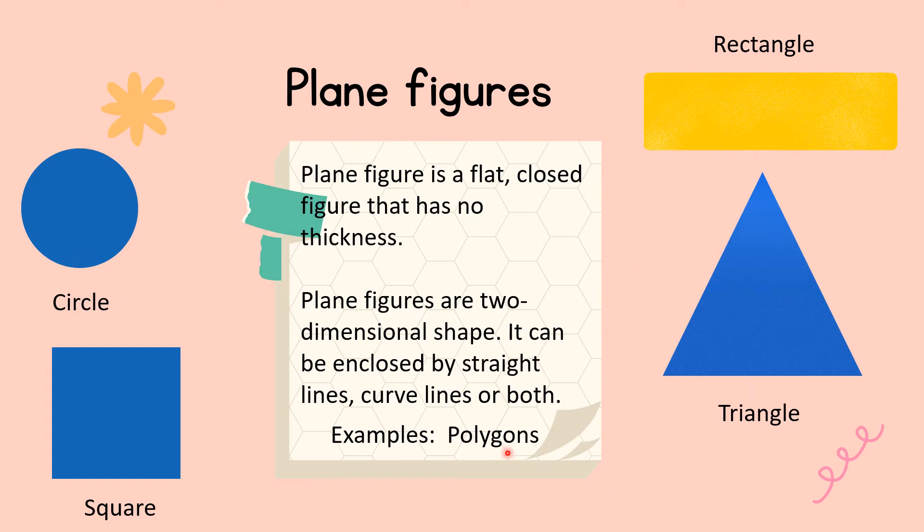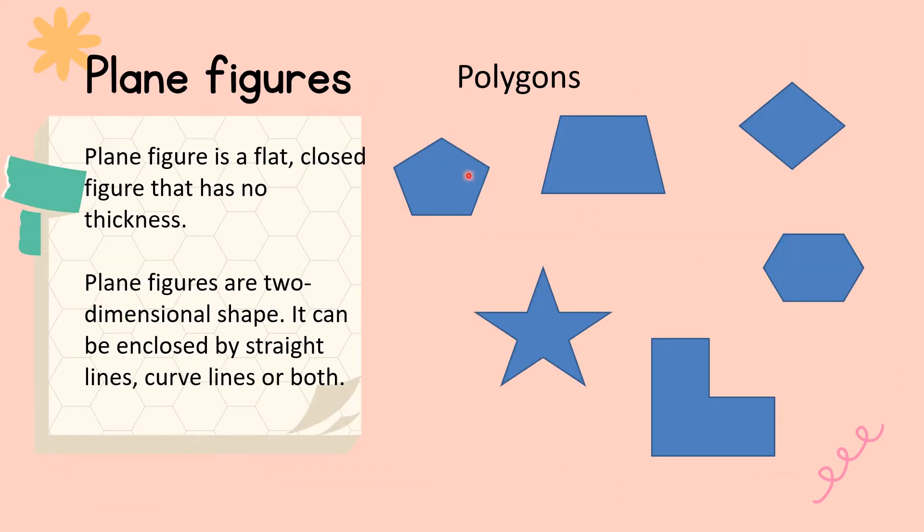Now, other examples of plane figures are the different kinds of polygons. So you have here, what do you call this one? How many sides this one? One, two, three, four, five. So that is a pentagon.